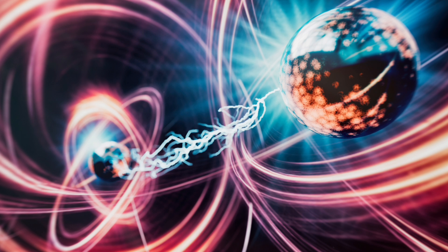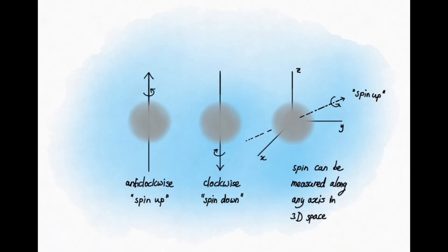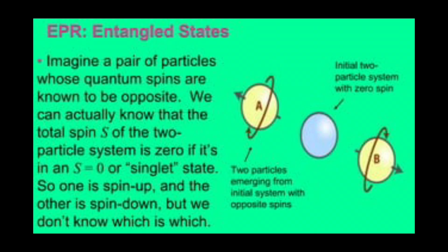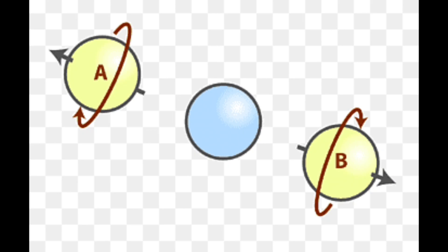The idea that objects are only directly influenced by their immediate surroundings, as well as Einstein's belief in realism—the idea that physical quantities have definite values before they're measured. EPR suggested that there might be hidden variables, unknown factors that could account for the seemingly probabilistic nature of quantum mechanics, allowing it to be a deterministic and thus complete theory.